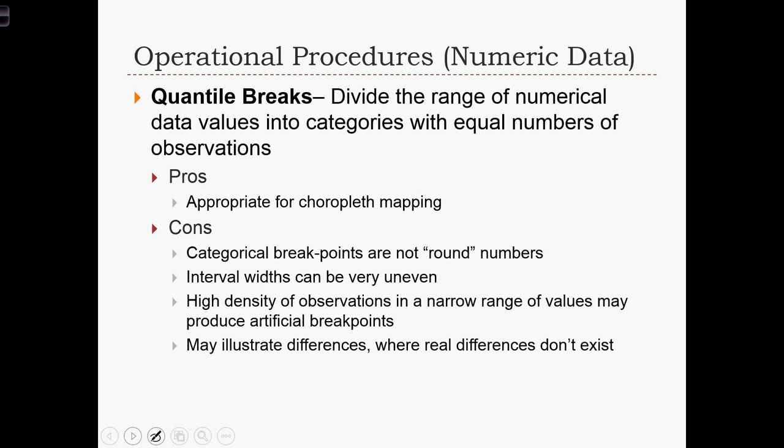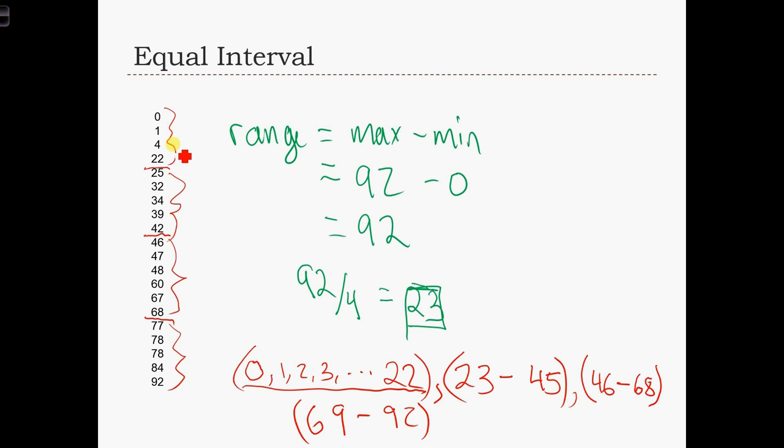Another popular classification scheme is quantile breaks. With quantile breaks, we divide the range of numerical data values into categories with equal numbers of observations. Before, with equal interval, our categories were divided such that each category had an equal number of possible data values in it. The length of each interval was equal. The length of the interval was 23.